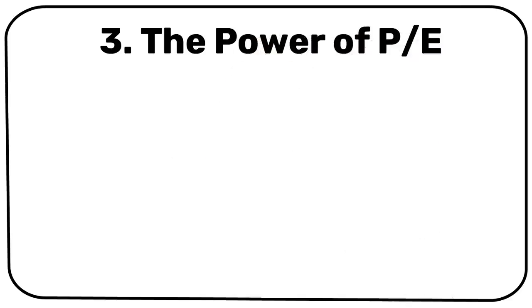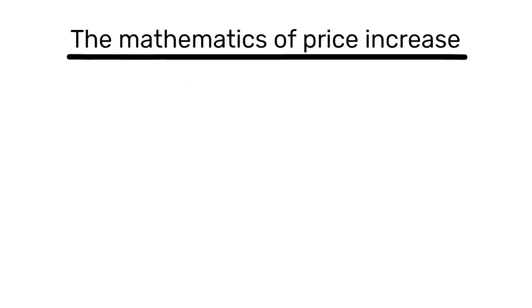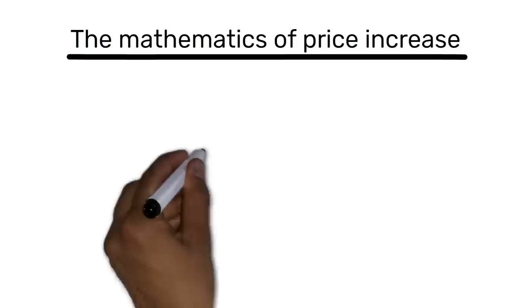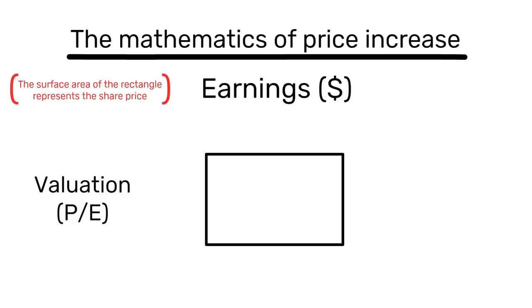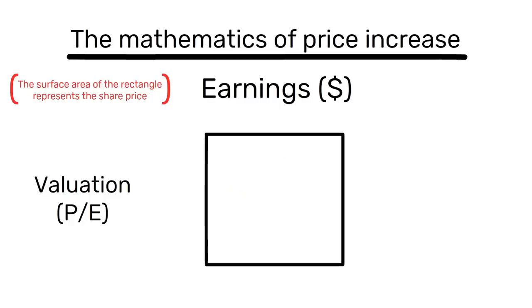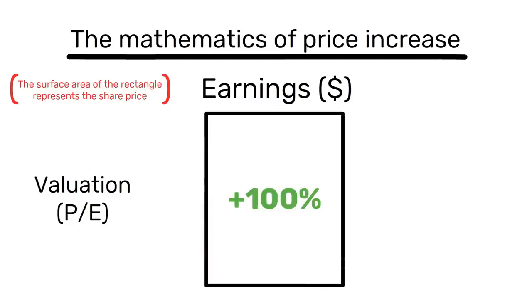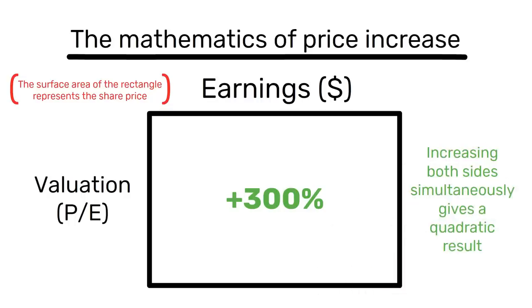Takeaway number 3. The power of PE. Usually there are two reasons why a stock increase in price. We've already mentioned the first one, which is growing earnings. The second one is simply the valuation of those earnings. Think about the area of this rectangle as the price of a company. On one side we have earnings. On the other side we have the valuation of those earnings, often times expressed as PE, or price to earnings. The area, or the price of the stock, can double if we double the earnings. But it could also double if we double the PE. Here's the point. If both earnings and the valuation can increase simultaneously, we're getting a quadratic result, which is way more powerful than just a linear increase on either side. Most 100 to 1 stocks increase both earnings and their valuations.